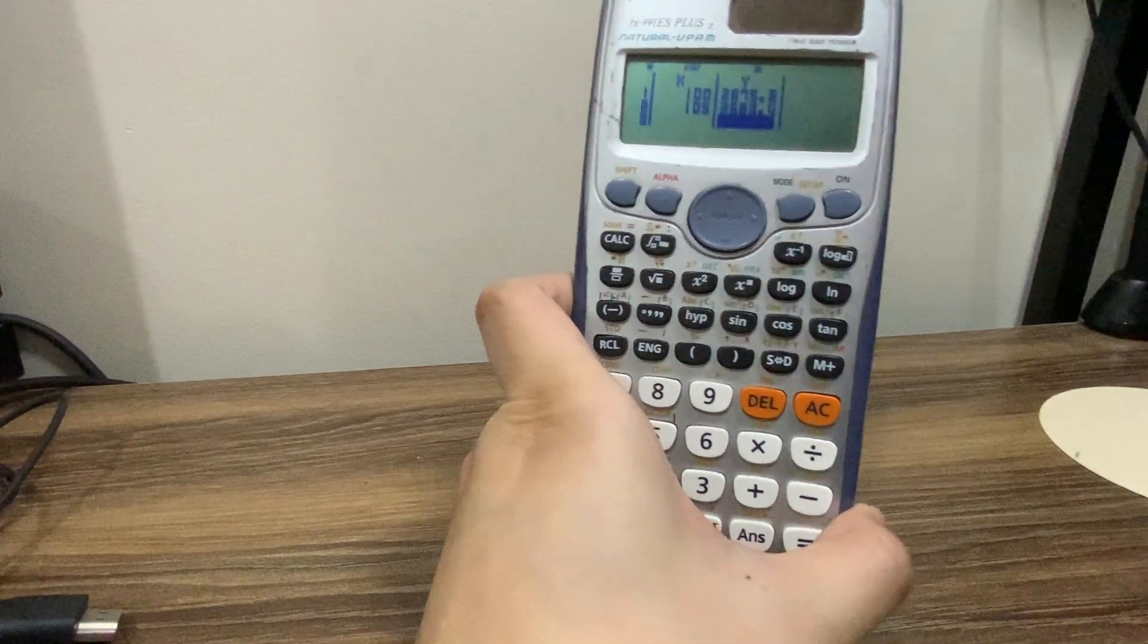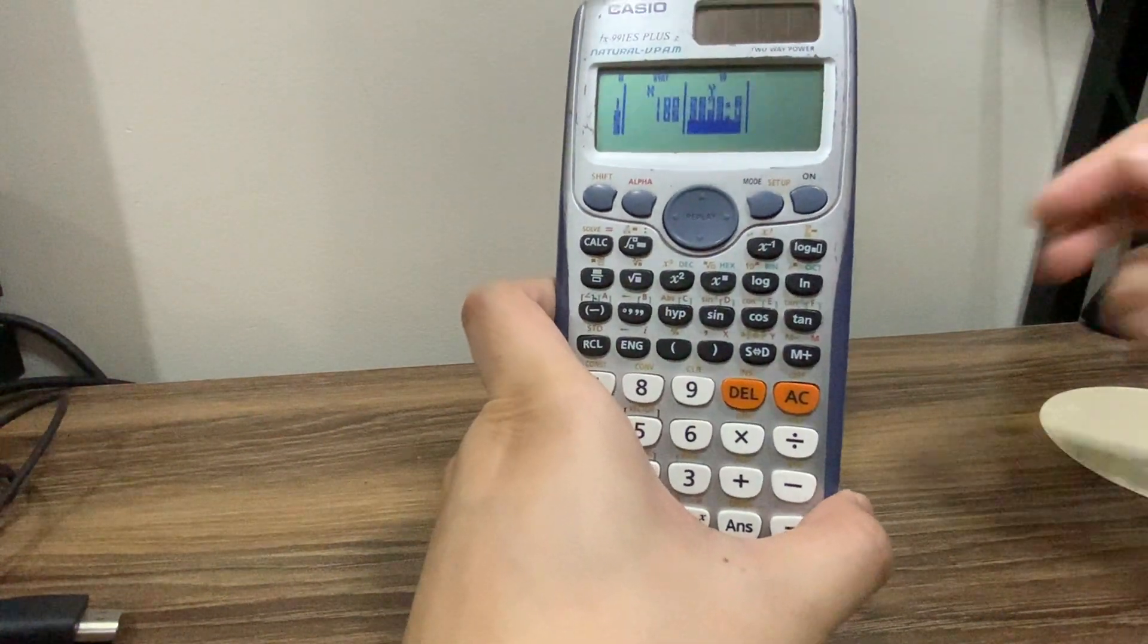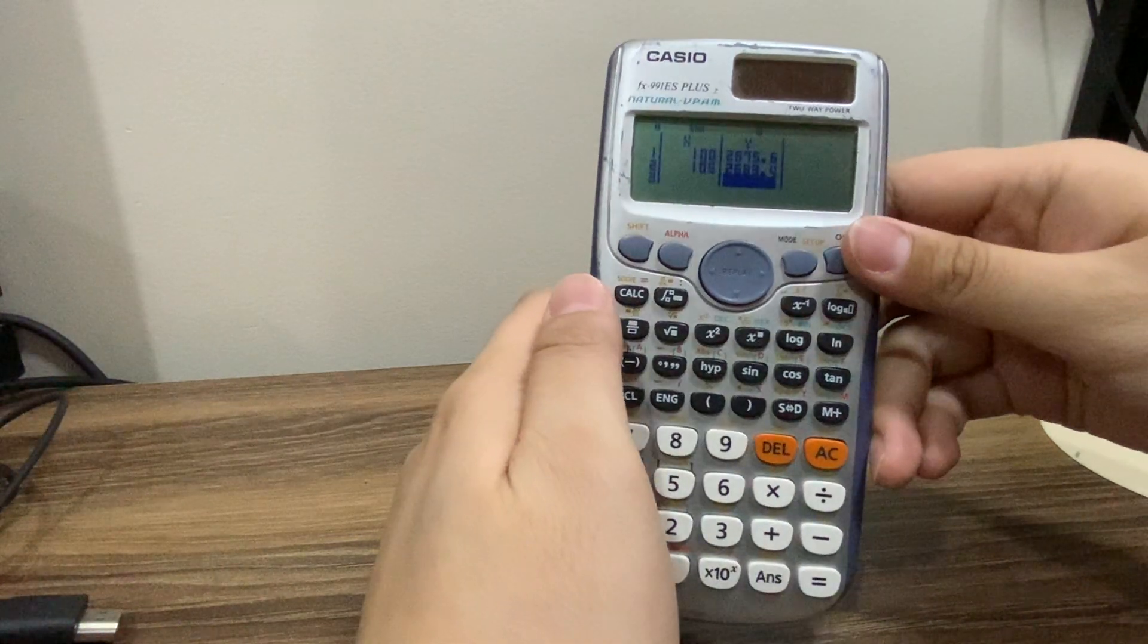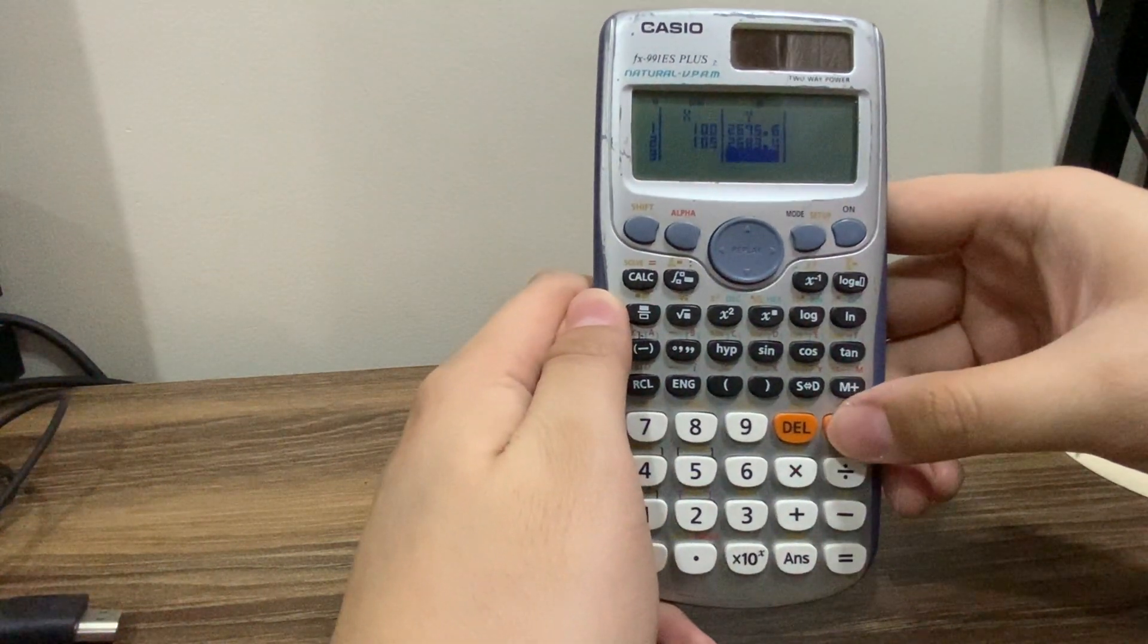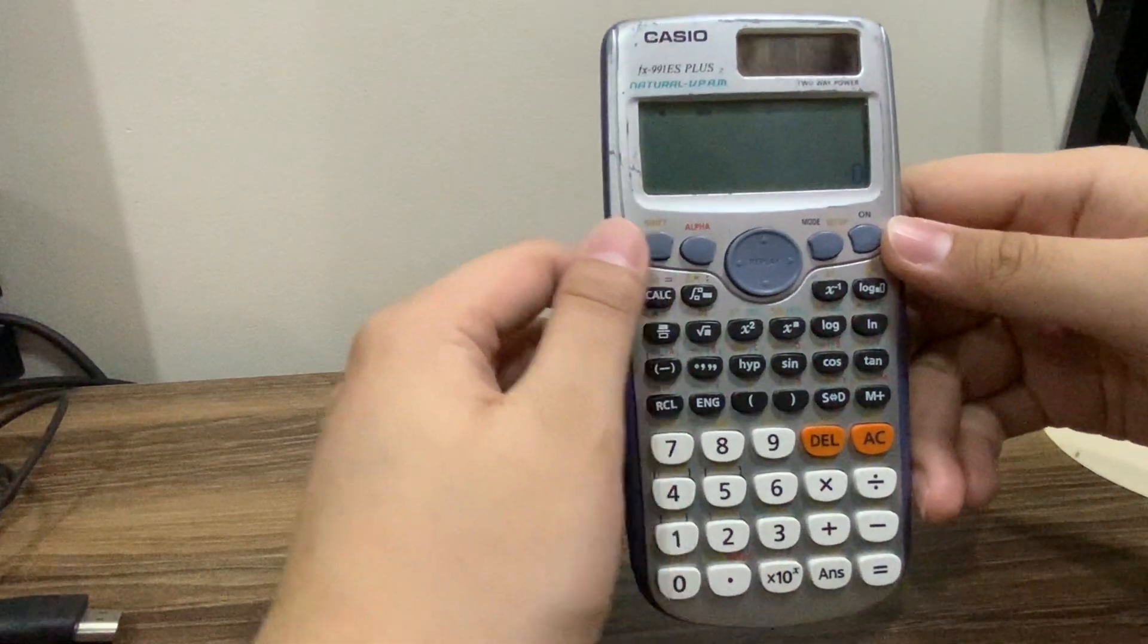Okay, so these are the values we will use now. The values are now inputted. You can now click AC.